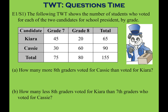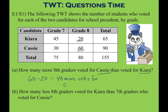Here's a frequency table with a couple of questions. The two-way table shows the number of students who voted for two candidates for school president by grade. Kiera and Cassie each got votes from 7th and 8th graders, and there are 155 votes altogether. The first question: how many more 8th graders voted for Cassie than Kiera? The difference between 60 and 20 is 40, so there are 40 more votes for Cassie than Kiera.